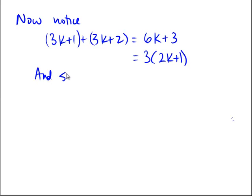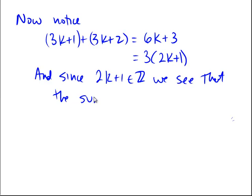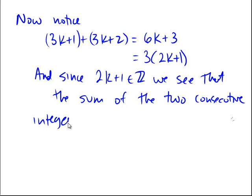And since 2k plus 1 is an integer, we see that the sum of the two consecutive integers, the sum of the two consecutive integers is divisible by 3.